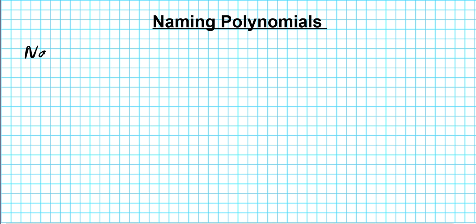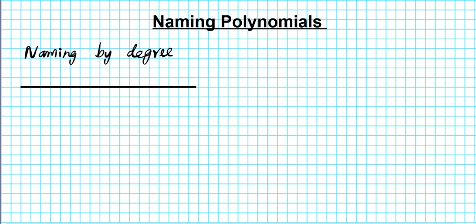Let's start with naming by degree. If you know the degree of a polynomial, you can use that information to name it. Let's go over the different names that polynomials have based on their degree. In the first column we'll place the degree, and in the second column we'll look at the name of that polynomial based on that degree.